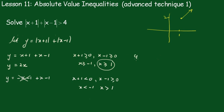Now take another one: y is equal to x plus 1 plus minus x plus 1. That's the case when x plus 1 is greater than or equal to 0 and x minus 1 is less than 0. This becomes x is greater than or equal to negative 1 and x is less than 1.